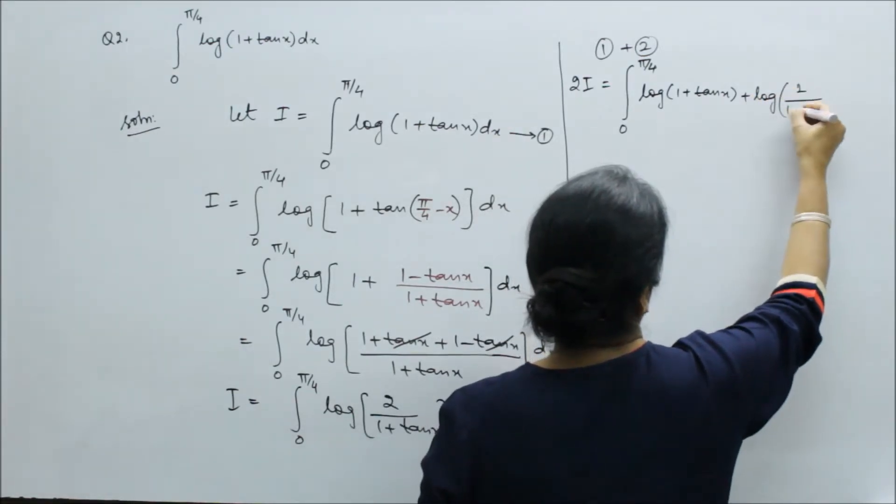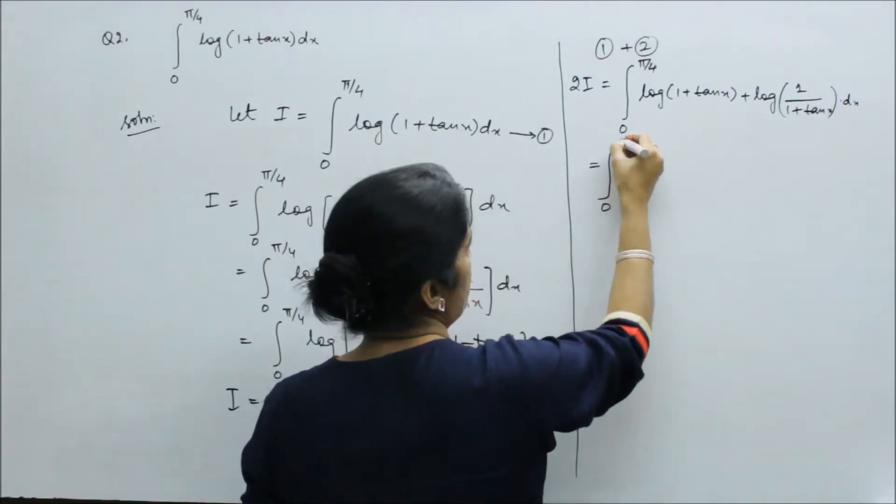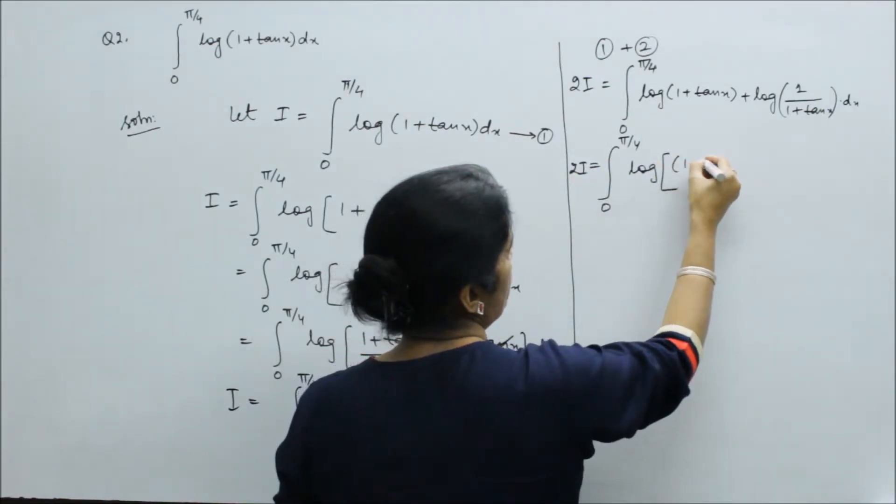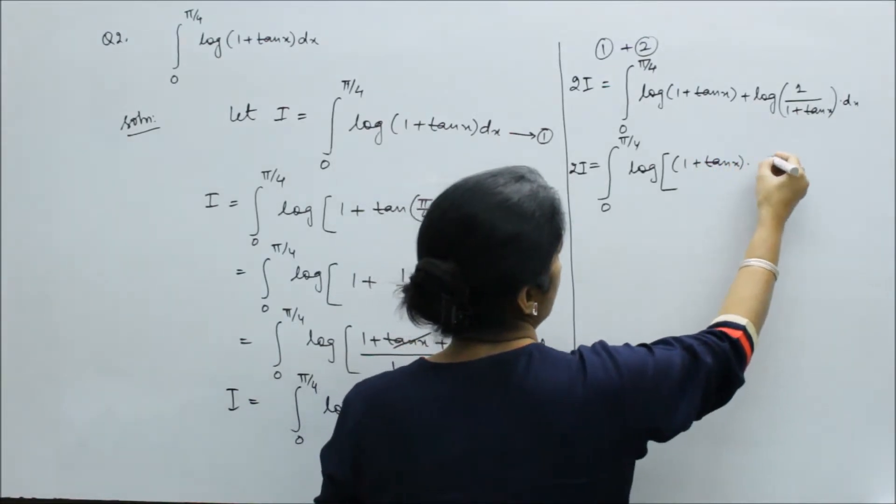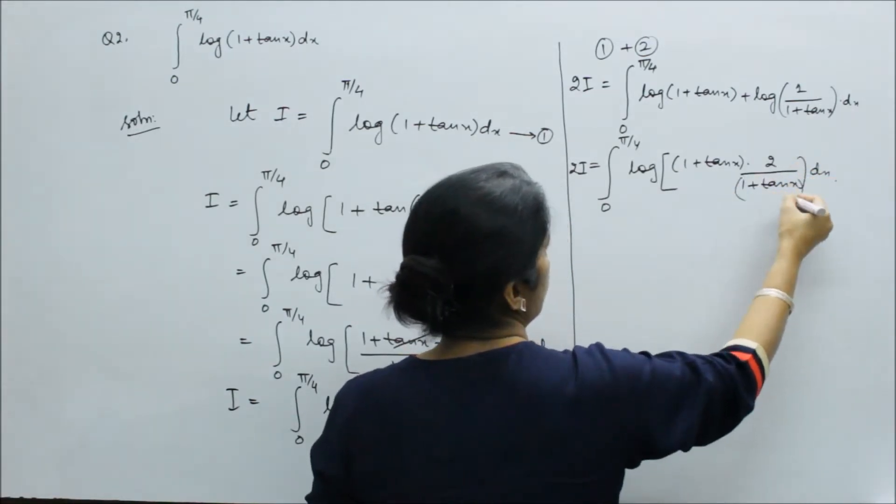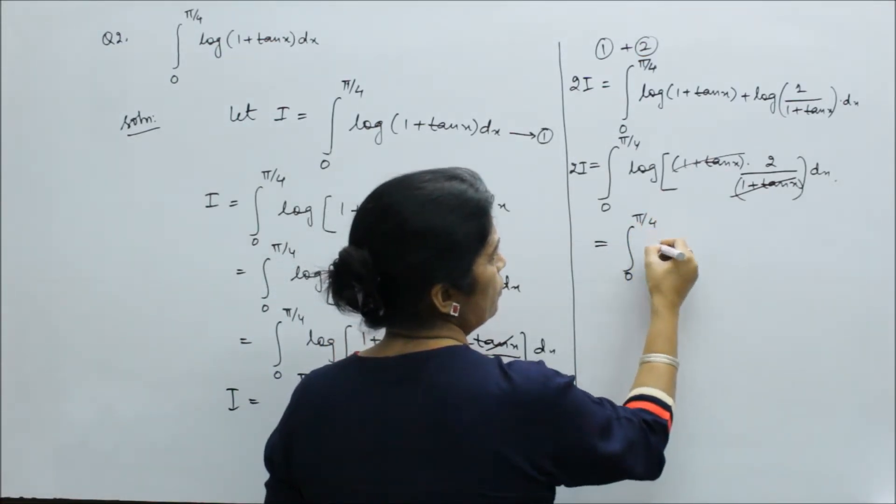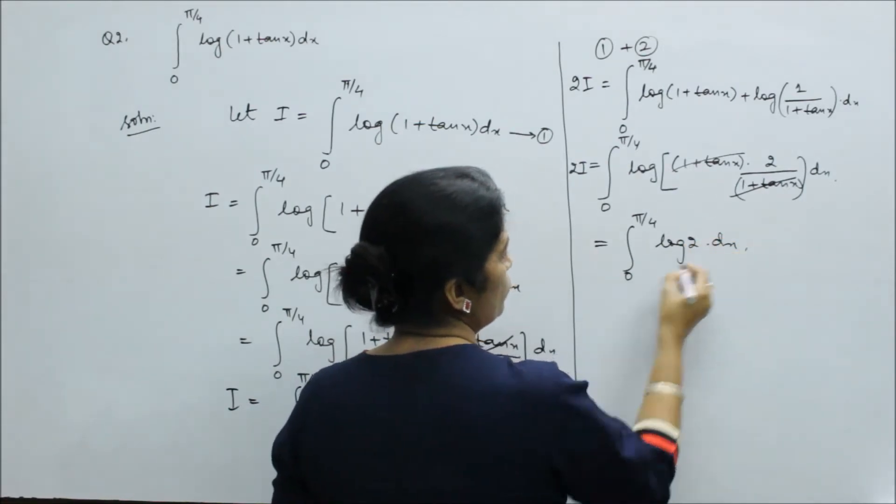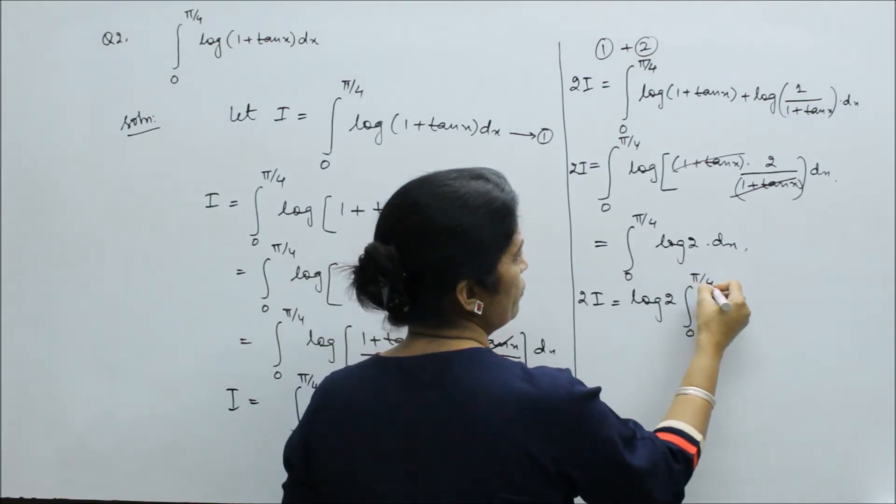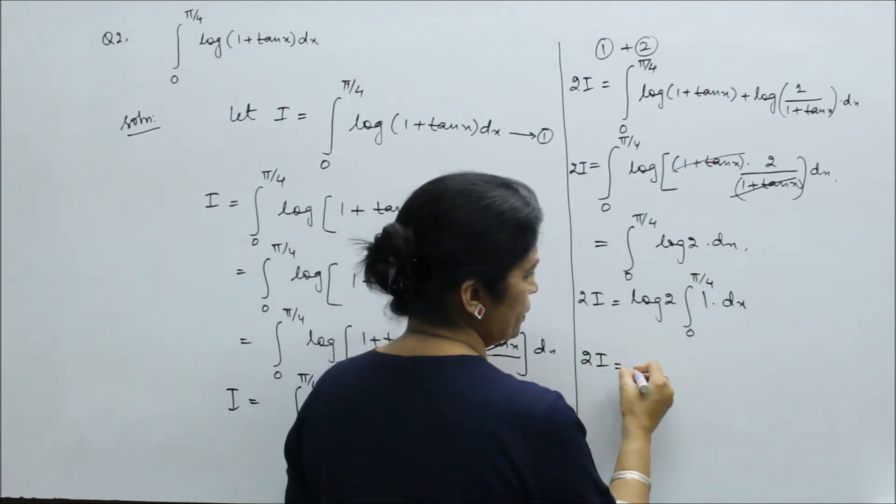0 to π by 4, log common when we take addition to the product form. This is beneficial, 1 + tan x cancels so we have log 2. Log 2 is constant so this is integral 0 to π by 4 only dx. Only dx means that here is 1 and the integral of 1 is x.